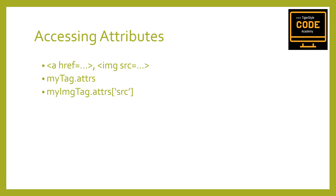With tag objects, a Python list of attributes can be automatically accessed by calling my_tag.attrs. Keep in mind that this literally returns a Python dictionary object, which makes retrieval and manipulation of these attributes trivial. The source location for an image, for example, can be found using my_image_tag.attrs and then specifying the attribute you want in brackets.